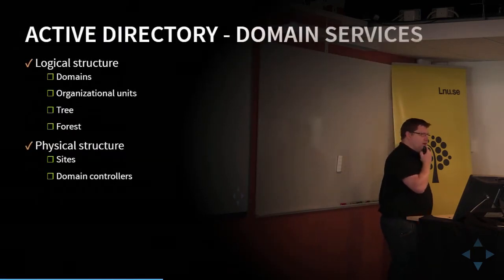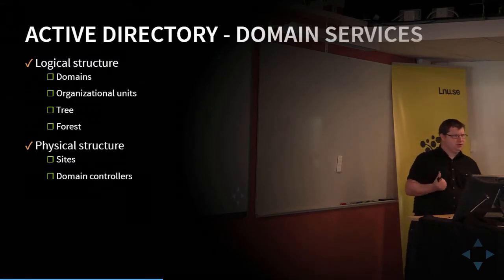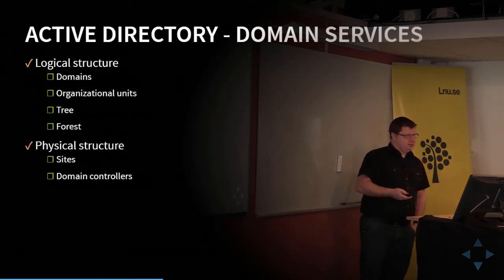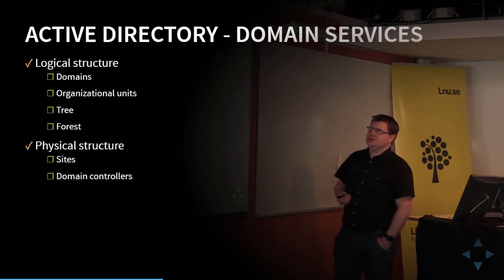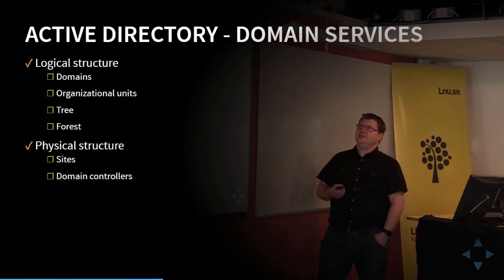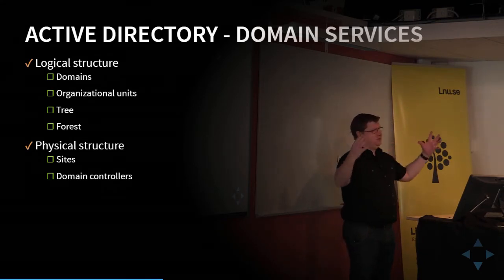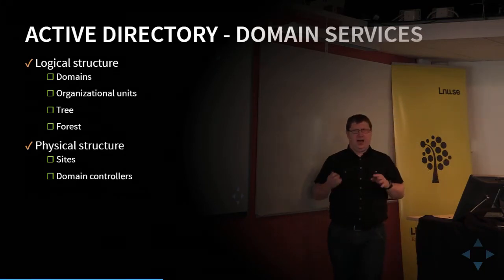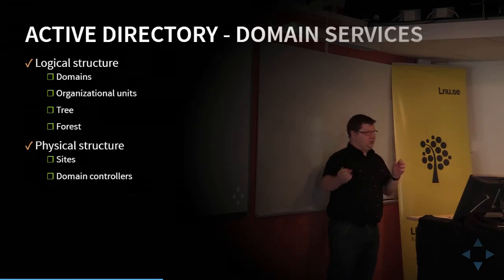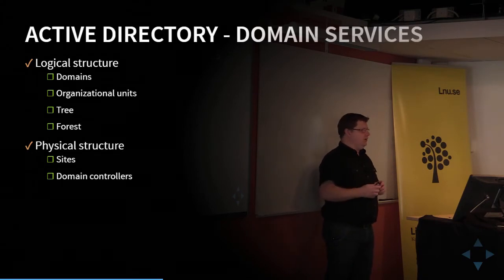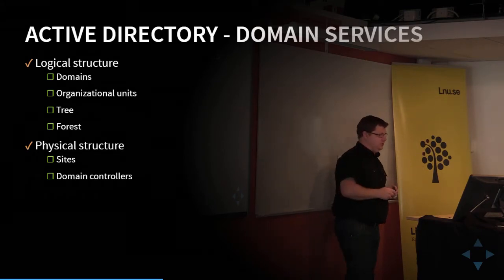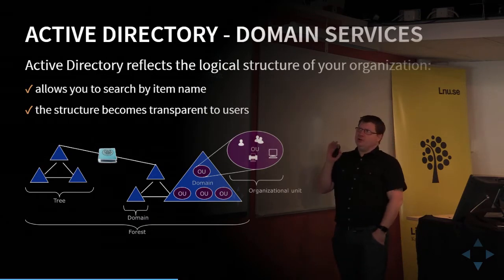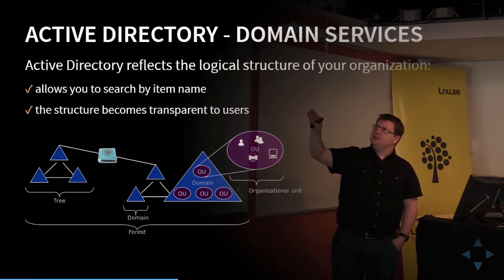When talking about Active Directory we usually discuss two structures: the logical structure and the physical structure. The logical structure has four different object types: domains, organizational units, trees, and forests — this helps us decide how to set up our Active Directory domain. The physical structure is about how the network should be organized, how servers handling this service should be connected, and where databases should be stored if we have multiple locations.